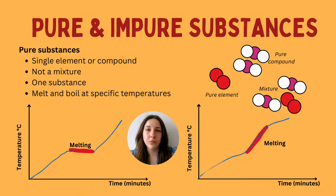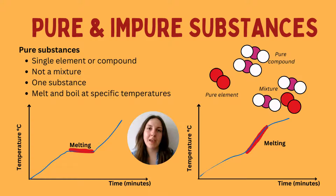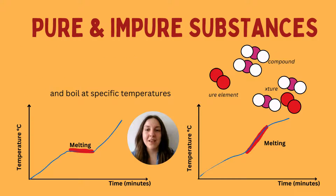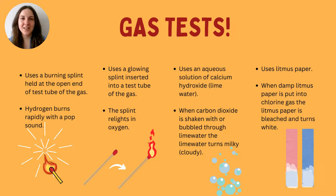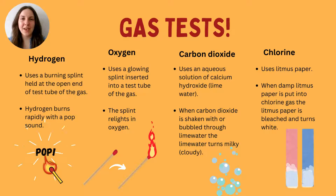In the exam, if you see a graph like this, a nice straight horizontal line tells you there's only one thing in that substance at that melting or boiling point, and therefore it must be pure. One of the first practicals you may have come across in this topic is gas tests, and you need to know the four specific gases and their tests.